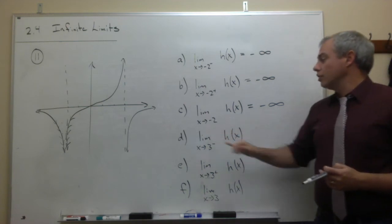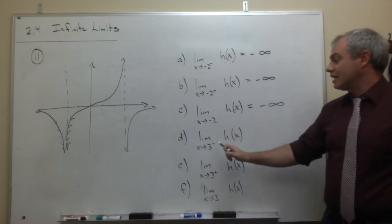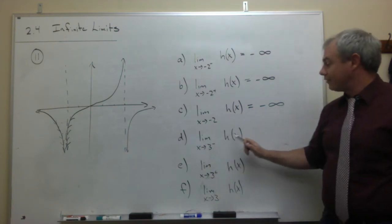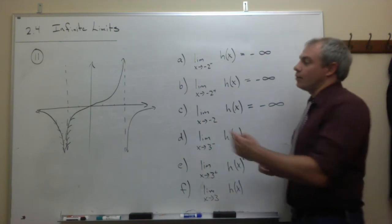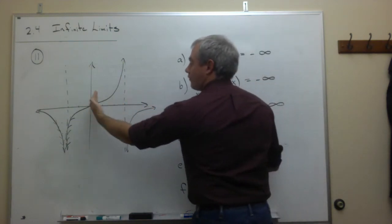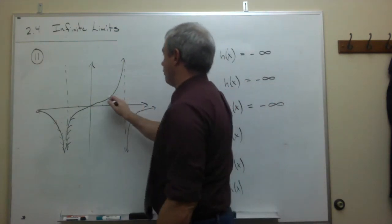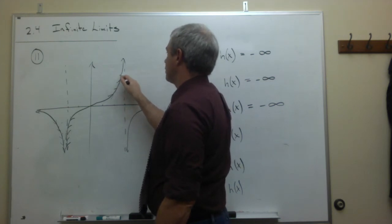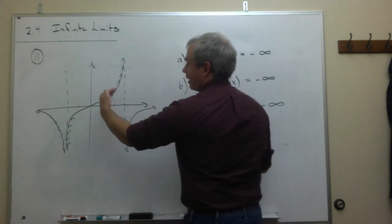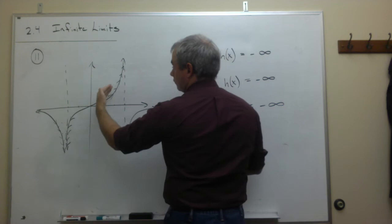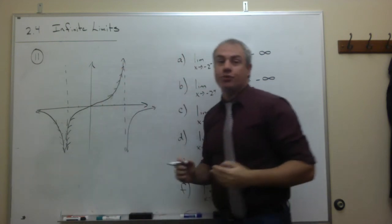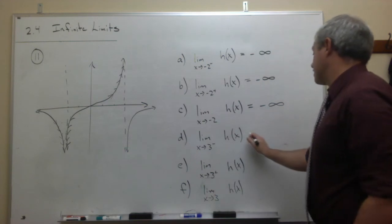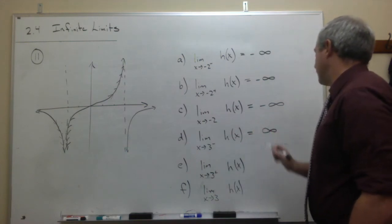Now let's look at part D. Part D is asking what's the limit as x goes to 3 from the left of h of x. So we're approaching 3 from the left, moving along the graph towards 3 from the left side. We can see that the y values are shooting up towards positive infinity. So this is going to be positive infinity.